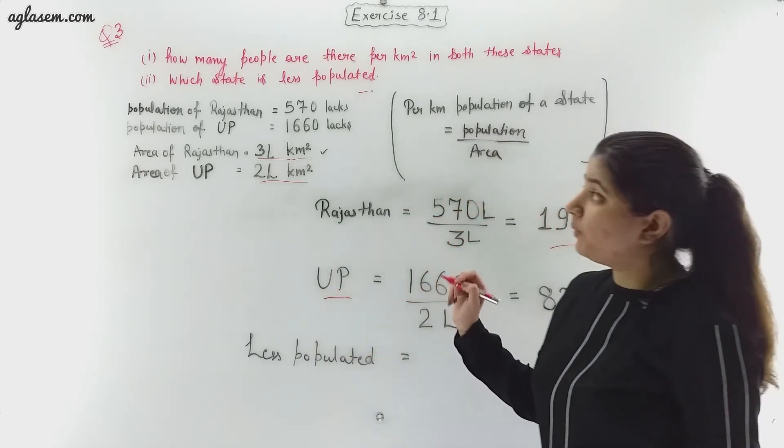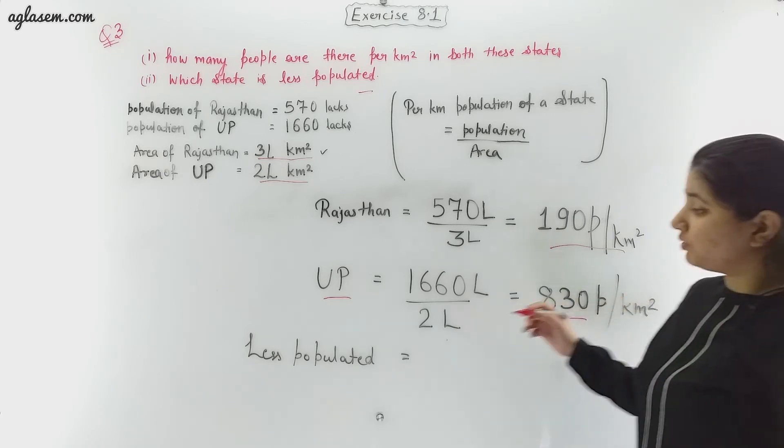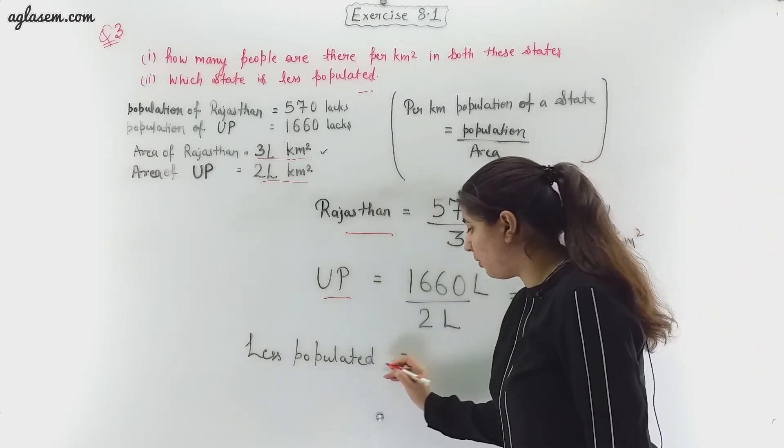For the second part which says which state is less populated, as we can see that 830 is more, so Rajasthan is less populated.